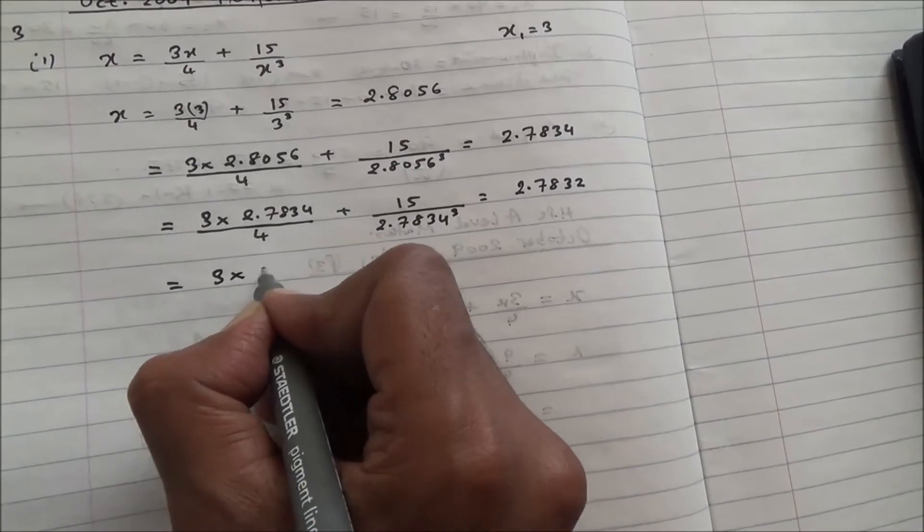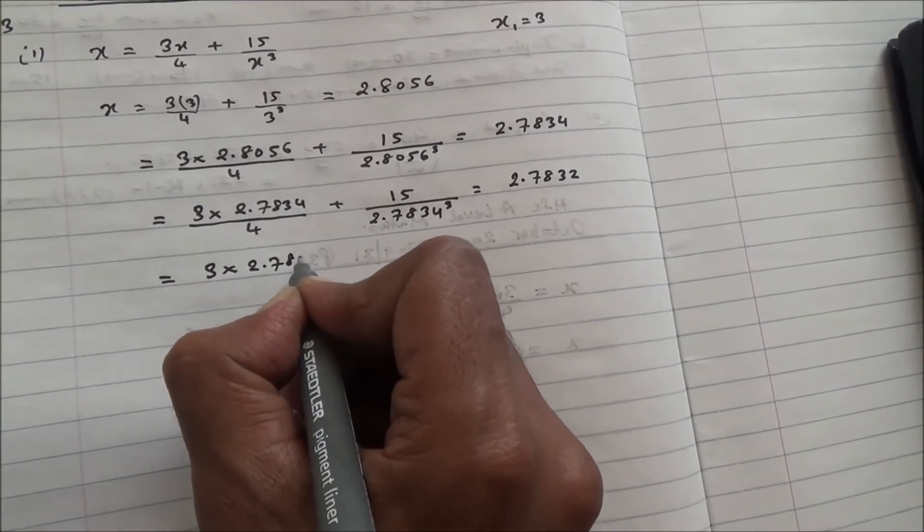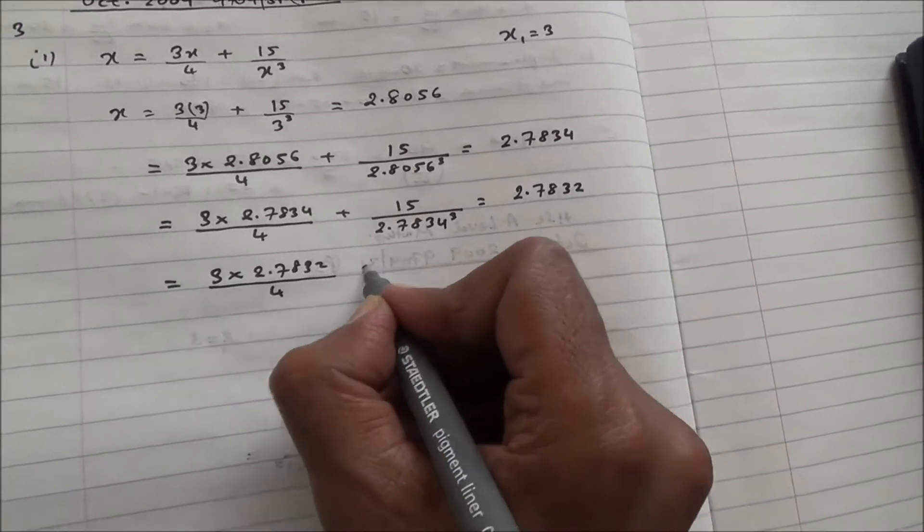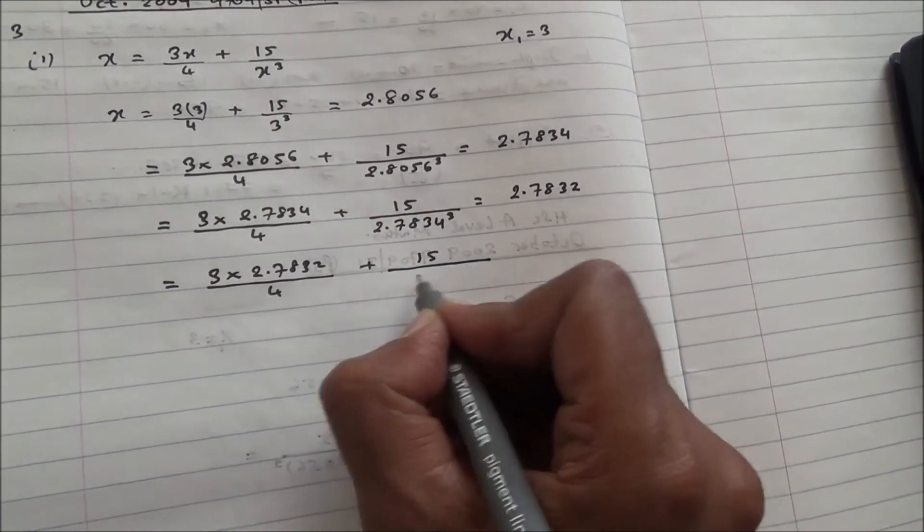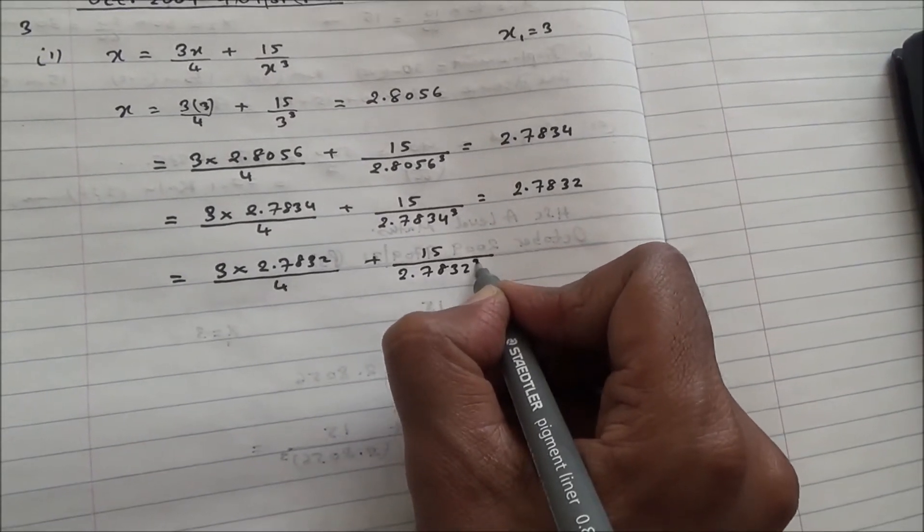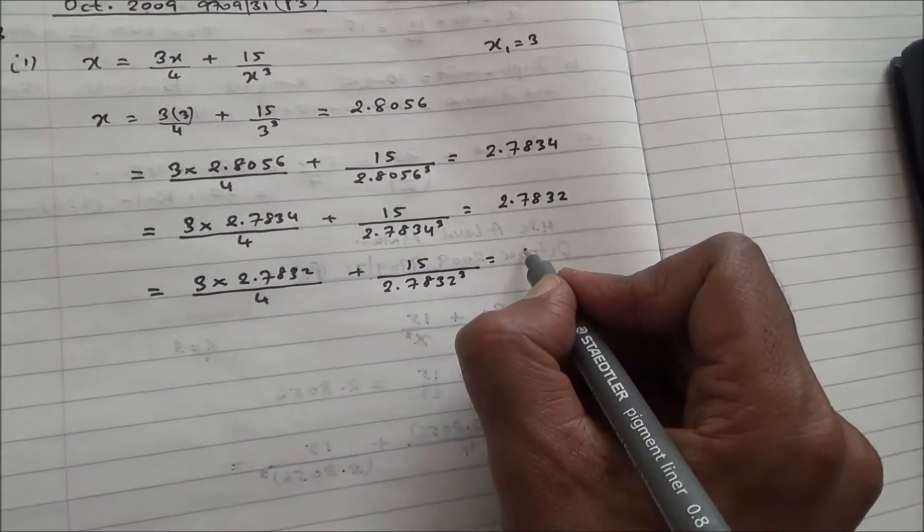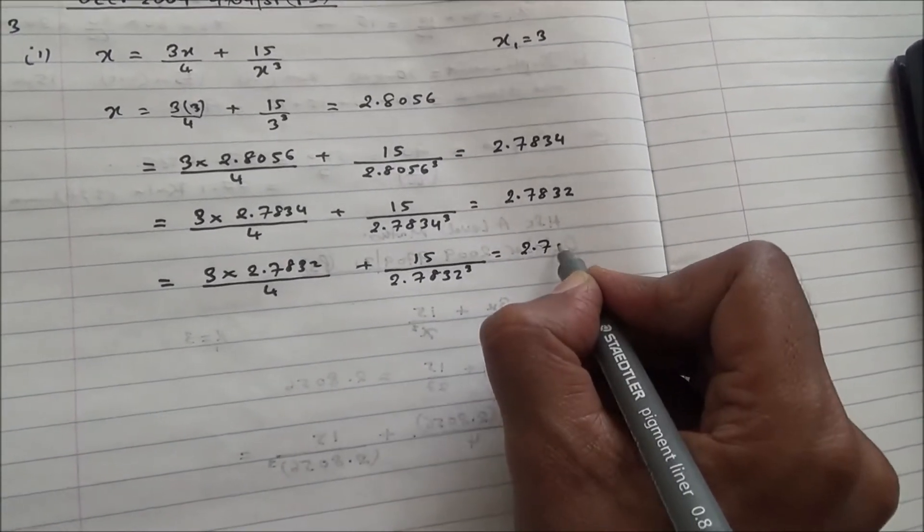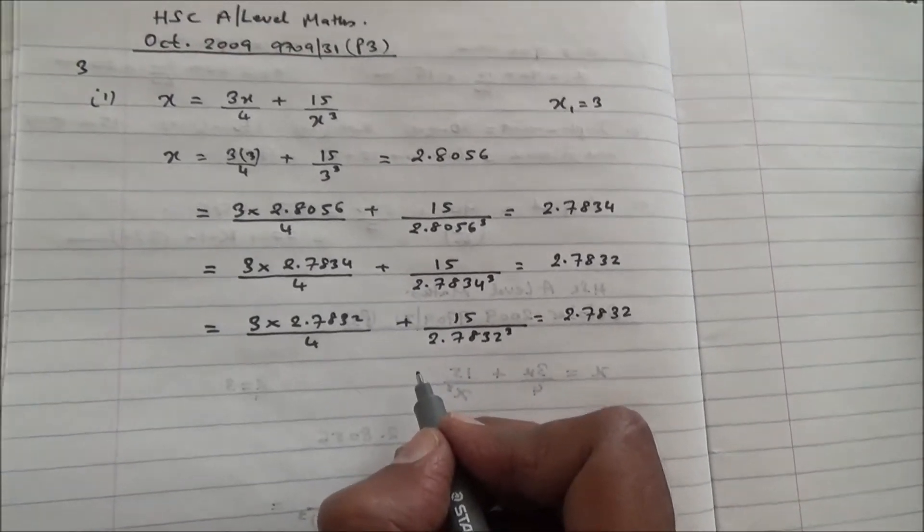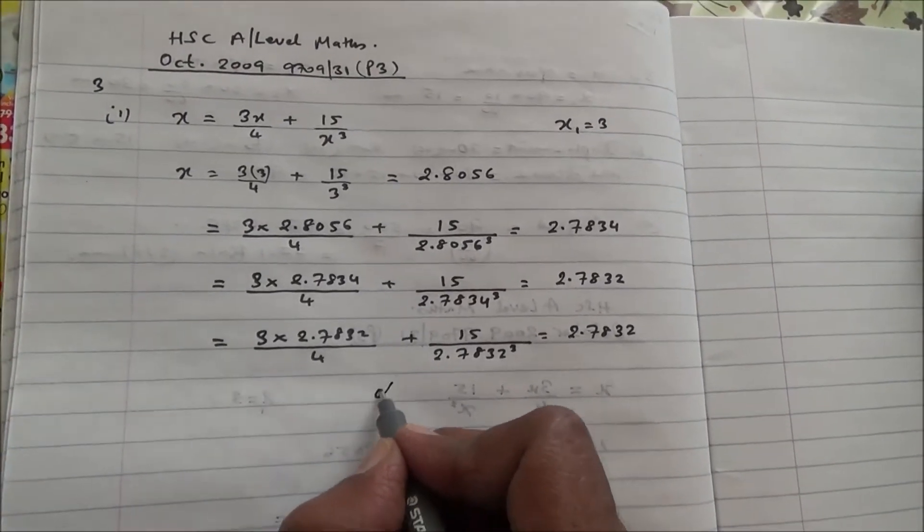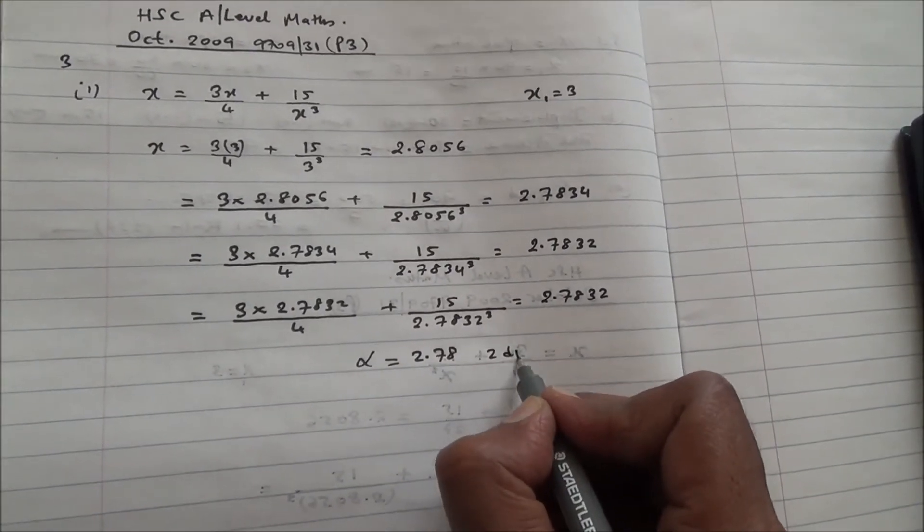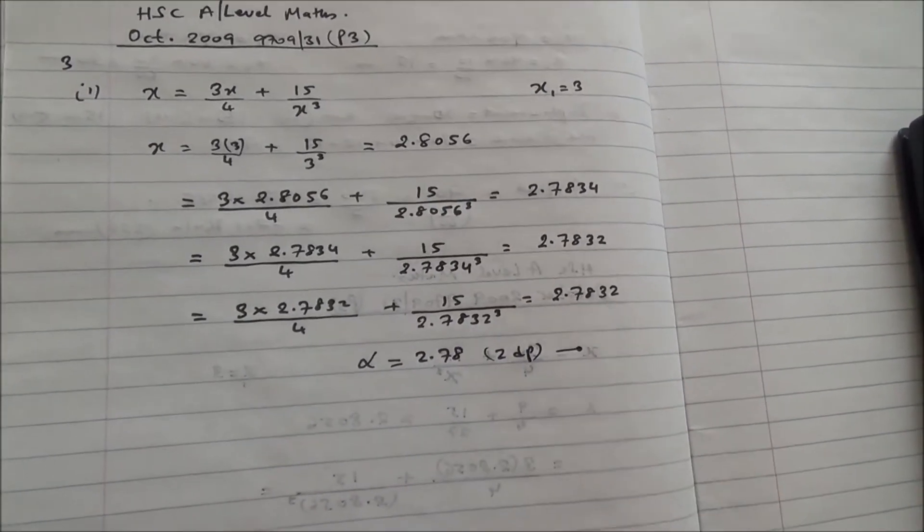The next one is going to be 3 times 2.7832 over 4 plus 15 divided by 2.7832 to the cube. And again, that's going to give you now 2.7832. So we have enough iteration there to state that the root alpha is going to be 2.78 to 2 decimal places. And here's the answer for the first part.